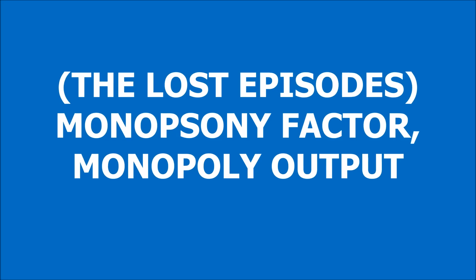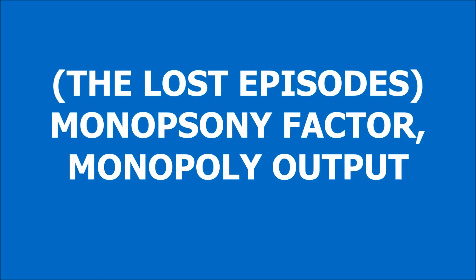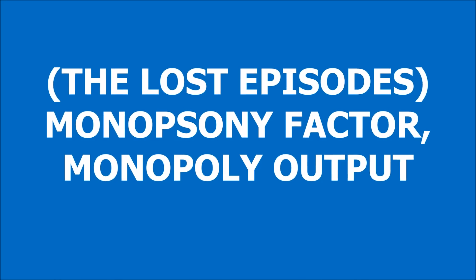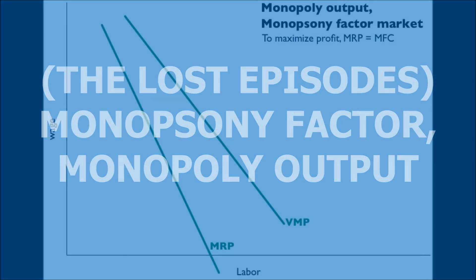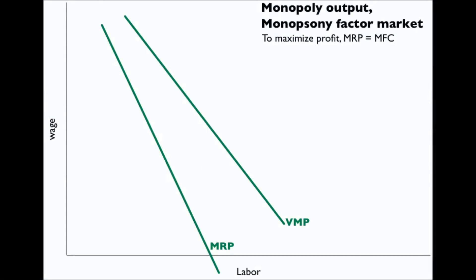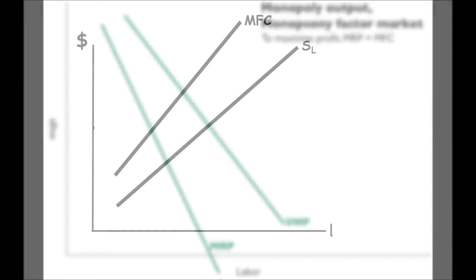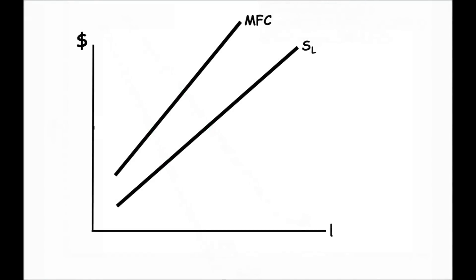Previously, we saw that if there is a monopoly in the output market, the value of the marginal product is going to be greater than the marginal revenue product. And with the monopsony resource market, the marginal factor cost will be greater than the wage.